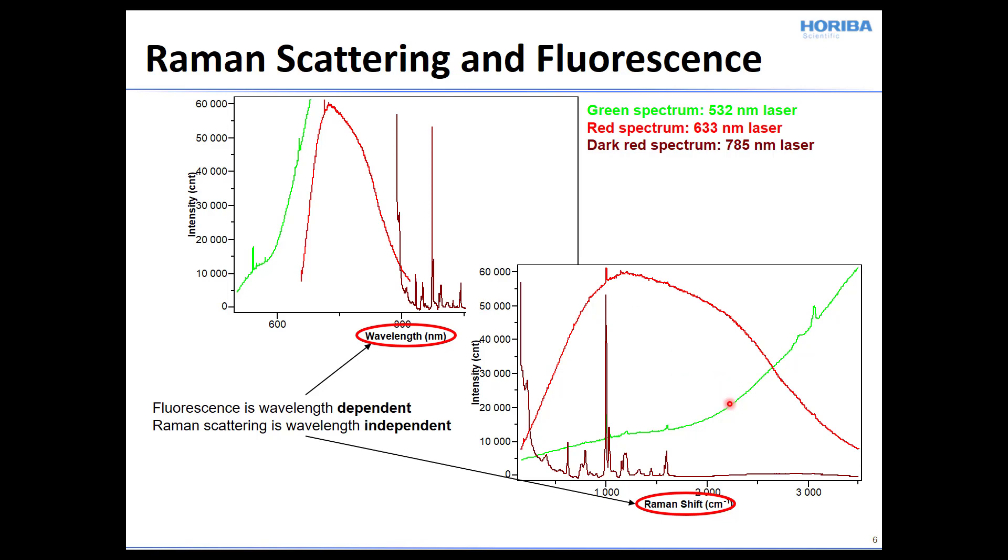Here we're plotting these same spectra on a Raman shift scale. And you can very clearly see how the fluorescence is obscuring the Raman scattering. Now, how does it do that? Well, the fluorescence is of course being detected at the same absolute wavelength as is the Raman scattering by the detector. And that very strong fluorescence signal that you see at 633 contributes then to the noise in the detector.